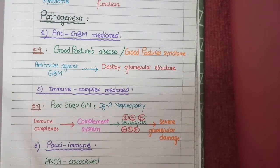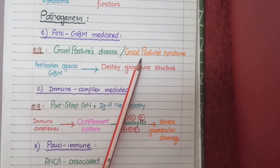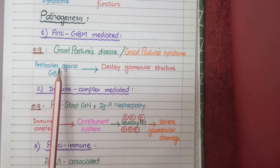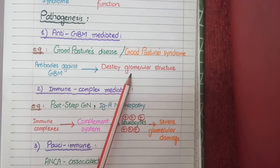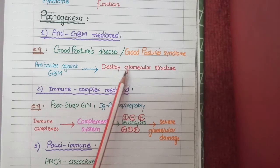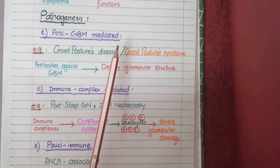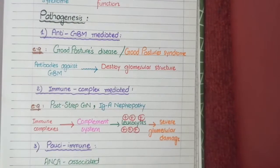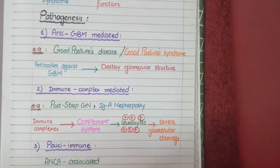An example of such diseases is Goodpasture's disease or Goodpasture syndrome. In these diseases, antibodies formed against the glomerular basement membrane destroy the glomerular structure, and the resultant glomerular injury results in nephritic syndrome. This glomerular injury is so severe that it causes rapid decline in renal function, which is why we classify it as rapidly progressive glomerulonephritis.